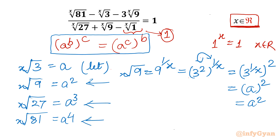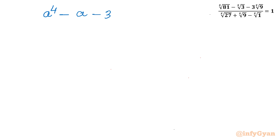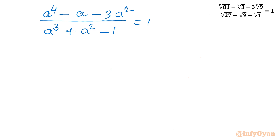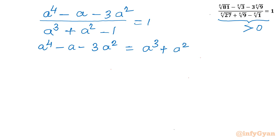Let's substitute all the values. x-th root of 81 becomes a⁴, minus a, minus 3 times a squared, divided by x-th root of 27 which is a cubed, plus x-th root of 9 which is a squared, minus 1, equal to 1. Now I will cross multiply — the denominator cannot be 0, as the exponent must be greater than 0. So the equation becomes: a⁴ minus a minus 3a² equals a³ plus a² minus 1.